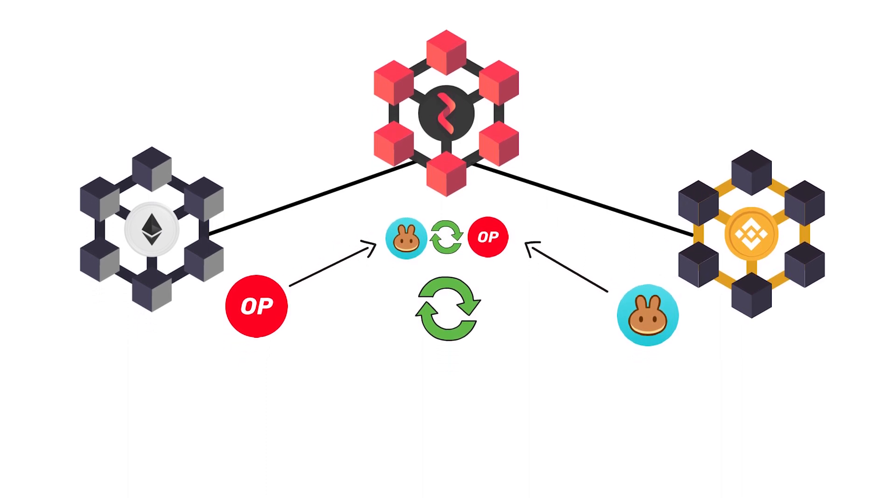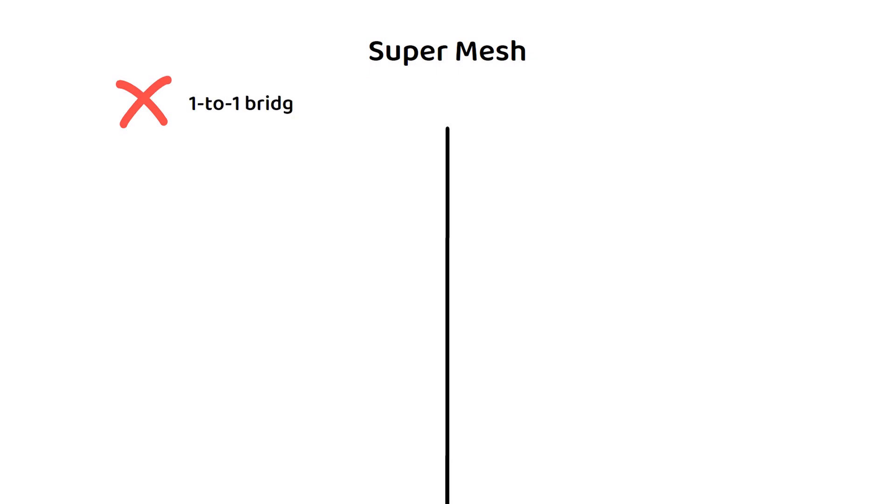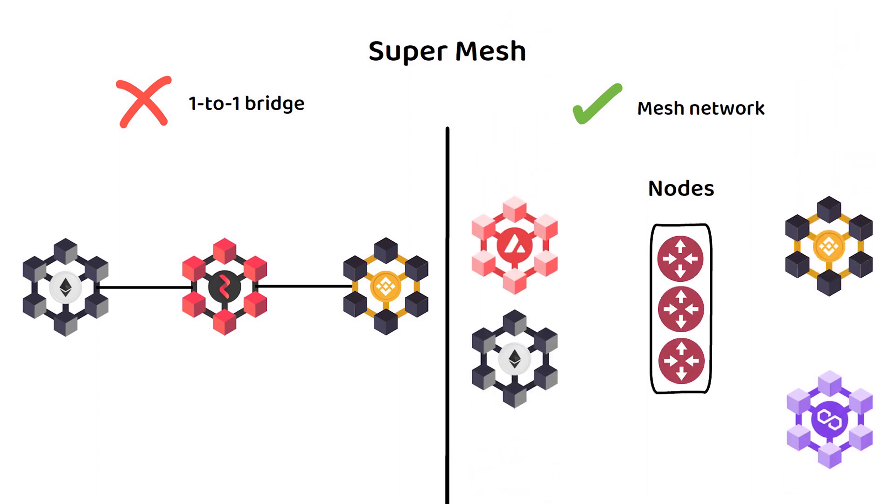The way Router Protocol works is through the supermesh. Instead of a direct one-to-one bridge, Router Protocol creates a mesh network where all chains are connected via the same set of router nodes.